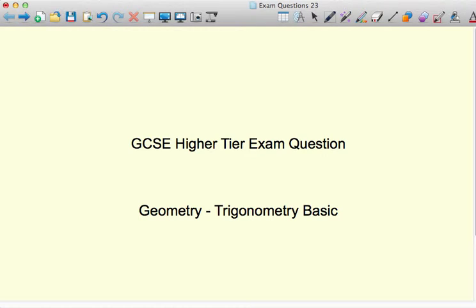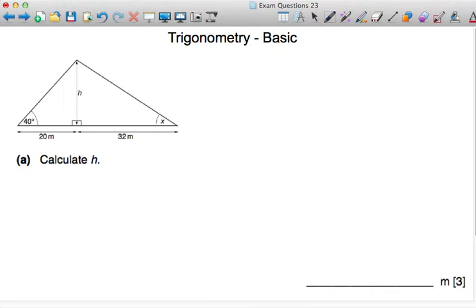Welcome to a GCSE higher tier exam question on basic trigonometry. Basic trigonometry applies to right-angle triangles. If we know two sides in a right-angle triangle, we can find an angle. If we know a side and an angle, we can find a side.